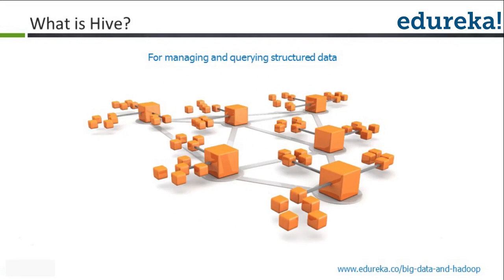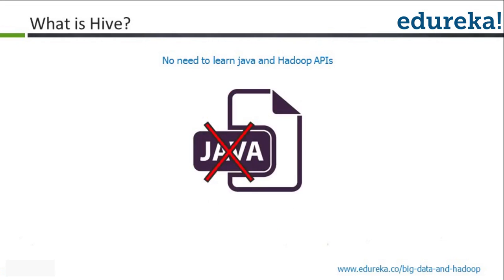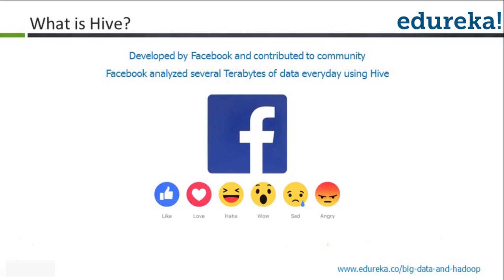Hive is used for managing and querying structured data — we are talking about tables and migrations, mostly focused on structured data processing. It extracts the complexity from Hadoop so you do not worry about how queries get converted internally. No need to learn Java at all, very less learning curve. Hive was developed by Facebook, and Facebook uses it to analyze terabytes of data, so any company in the world can use Hive for their data processing.